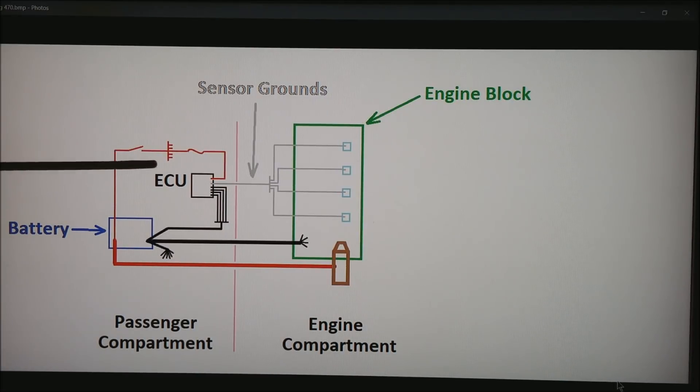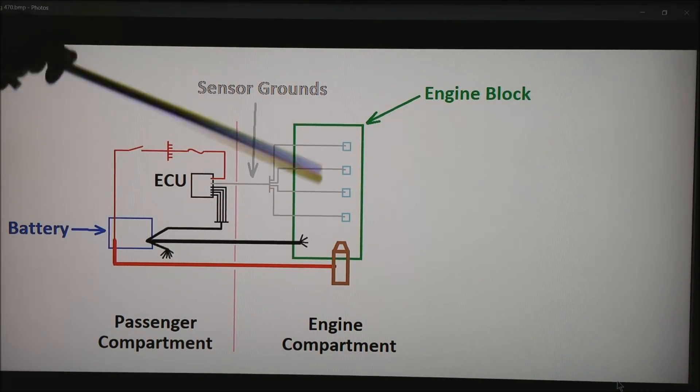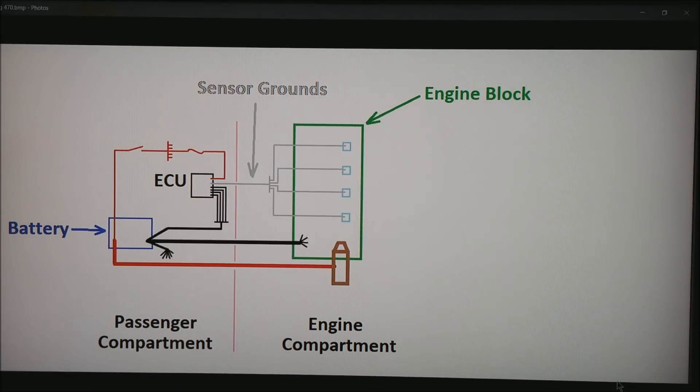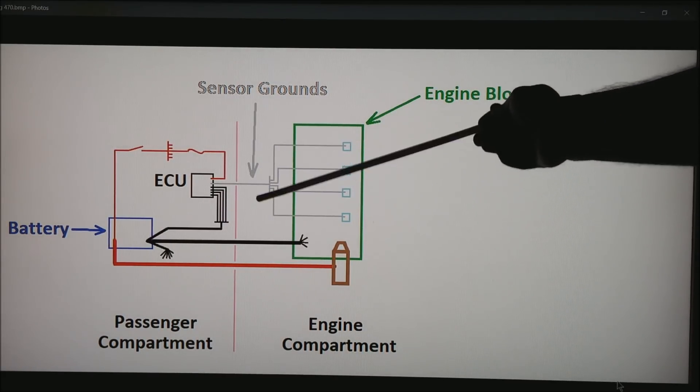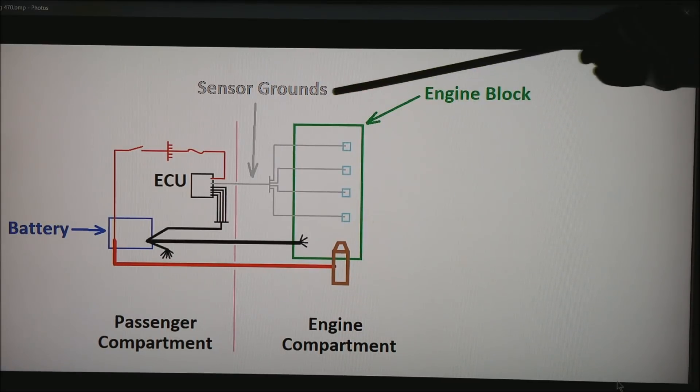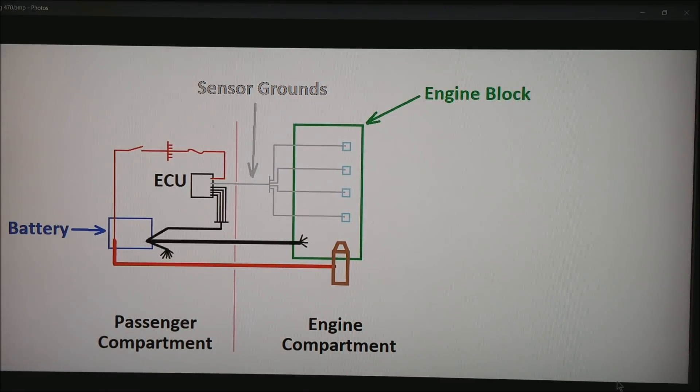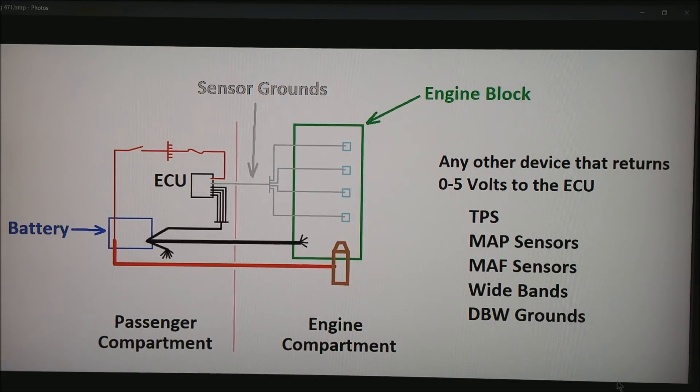Now let's look at the sensor grounds. What these are is typically anything that is returning a 0 to 5 volt signal back to the ECU needs sensor ground for the 5 volt system. What we have is, in this case, a second terminal strip for all of those coming back to the ECU. These are commonly things like the TPS, the MAP sensor, wide bands, and drive by wire grounds.